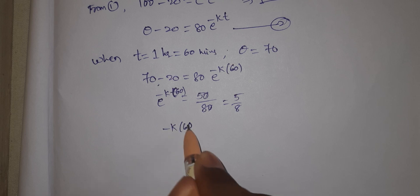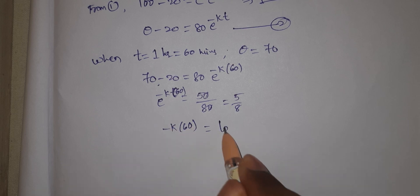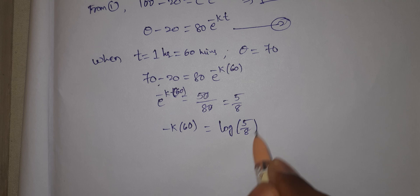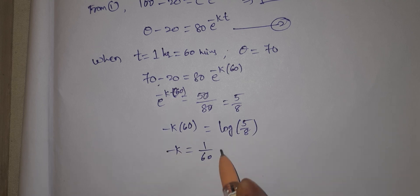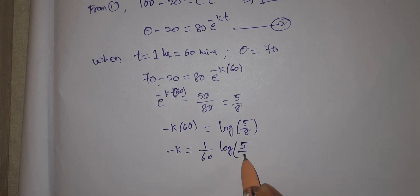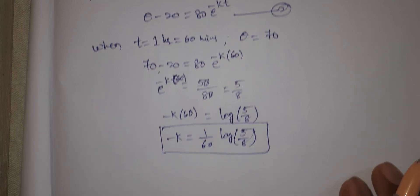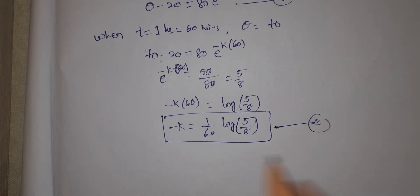Taking logarithm: minus k into 60 equals log of 5 by 8. Therefore minus k equals 1 by 60 into log(5/8). This is equation number 3.